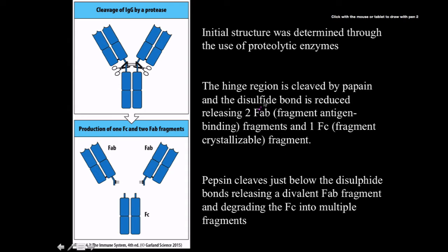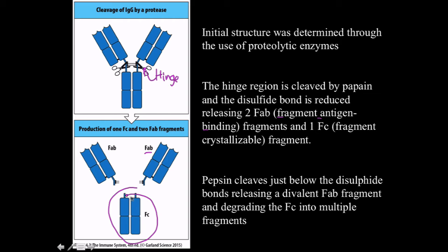The two parts of the antibody were classified by fracturing them with a protease — specifically pepsin — which cleaves at the hinge region. This gives us two FAB fragments, which stands for fragment antigen binding, and one Fc region, fragment crystallizable. The Fc region is the part of the constant region that determines the class or isotype of antibodies and interacts with plasma proteins and phagocytes, whereas the FAB region functions in binding to the pathogen.